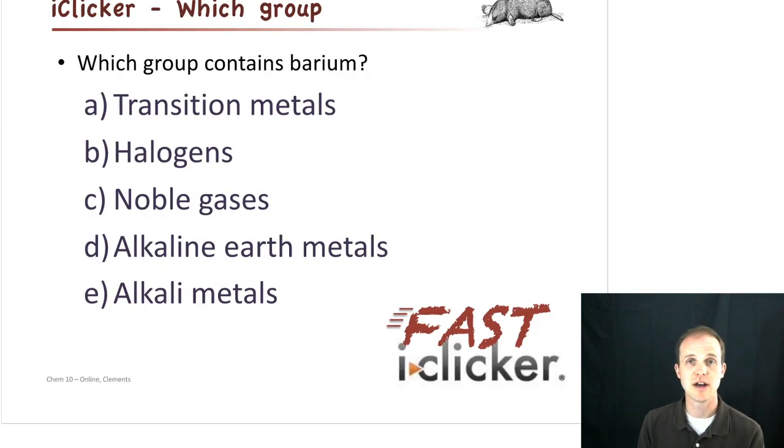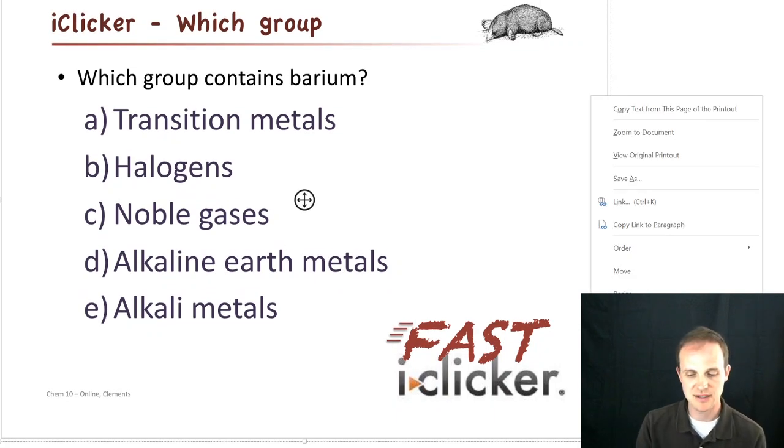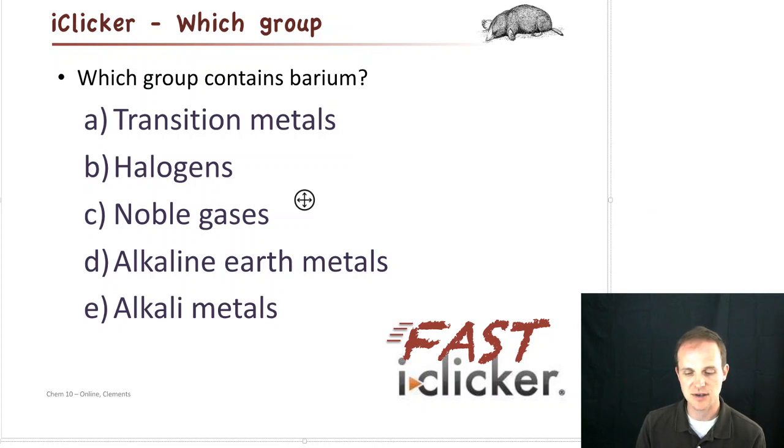All righty. So moving on to a question here, which one of these groups contains barium? We want to know, is it the transition metals, the halogens, the noble gases, the alkaline earth metals, or the alkaline metals? And so take a moment and answer that question.